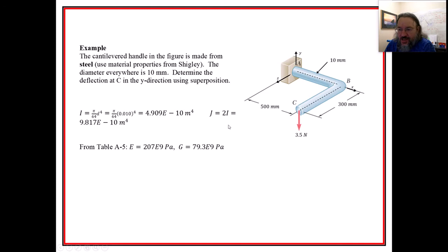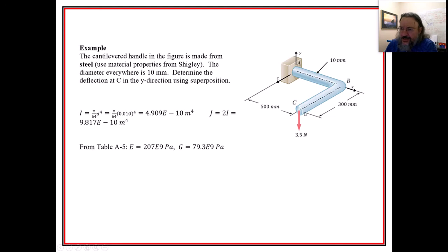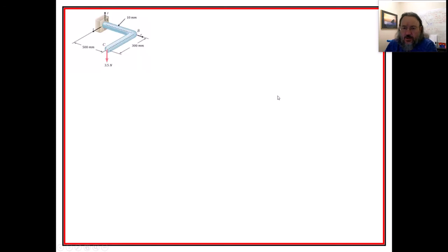So I used the 207 gigapascals and called it aluminum — it's actually steel. Here's the 500mm dimension, the 300mm dimension, 3.5 kilonewtons, and the 10 millimeter cross-section. This thing is not drawn to scale at all, as we'll see in the solid model.